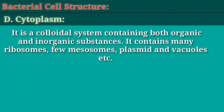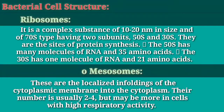D. Cytoplasm. It is a colloidal system containing both organic and inorganic substances. It contains many ribosomes, few mesosomes, plasmid and vacuoles. Ribosomes are a complex substance of 10-20 nanometers in size and of 70S type having two subunits, 50S and 30S. They are the sites of protein synthesis. The 50S subunit has many molecules of RNA and 35 proteins, and the 30S subunit has one molecule of RNA and 21 proteins.